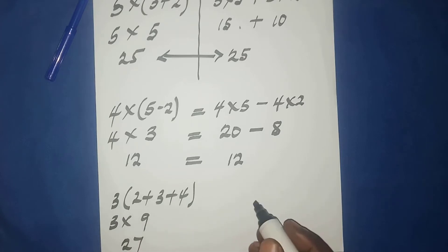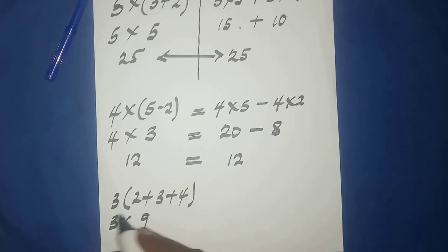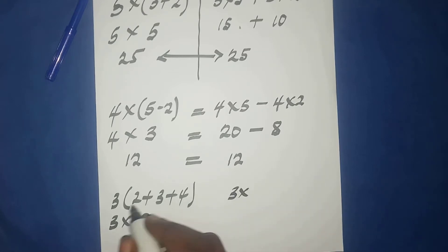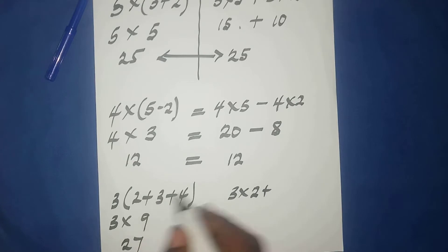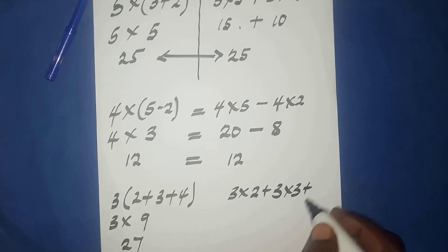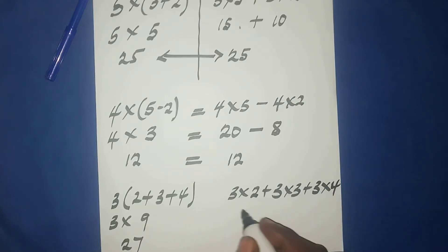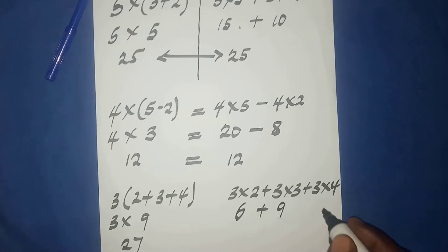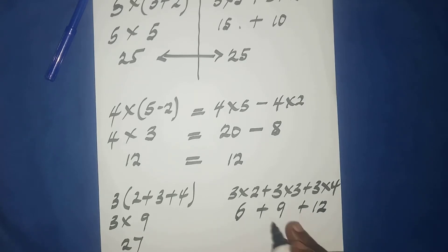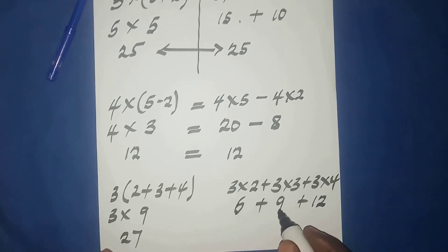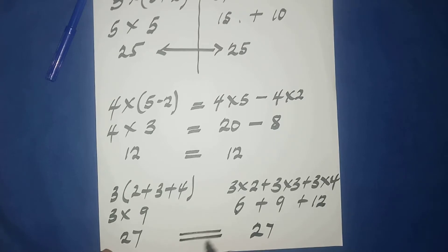We can also use the distributive property by distributing the three to all the numbers in the bracket: three times two plus three times three plus three times four. That gives six plus nine plus twelve. Six plus nine is fifteen, and fifteen plus twelve is twenty-seven — the same result.